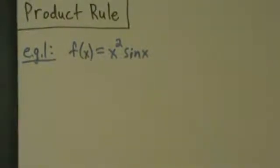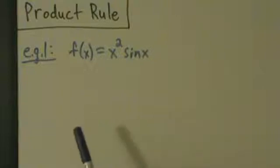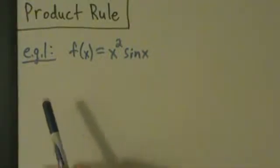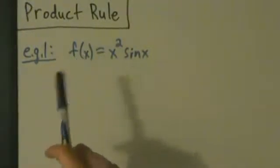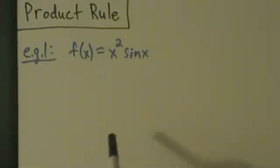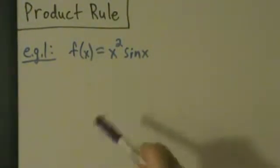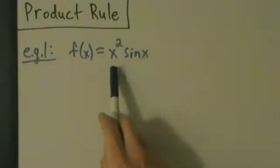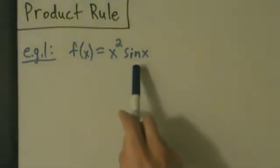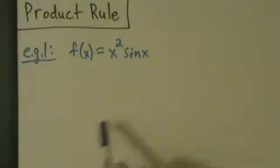Okay, so here's example one with the product rule. What we're going to do is first do this the right way, using the actual product rule, and then we'll do it the wrong way — by taking the derivative of this, multiplying by the derivative of that — and we're going to see that they're not the same thing.